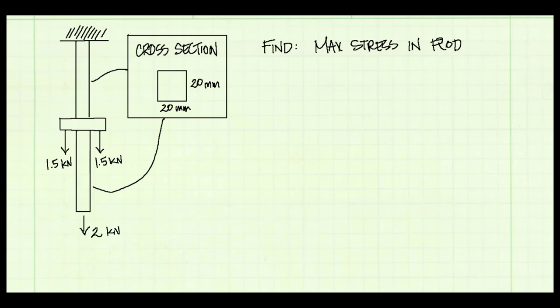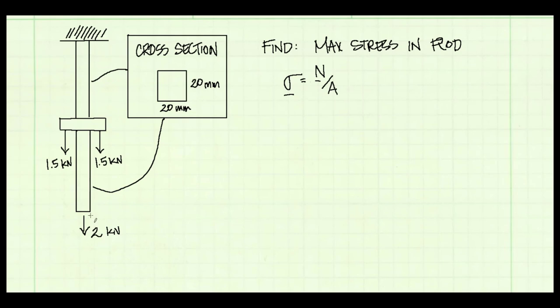Here's an example problem where we have a rod with some loads on it, and we are asked to find the maximum stress in the rod. The rod is loaded in tension, so we're looking for the normal stress using sigma equals normal force over area. We can get the area from the cross section. We need the maximum normal force, which will occur where the normal force is greatest.